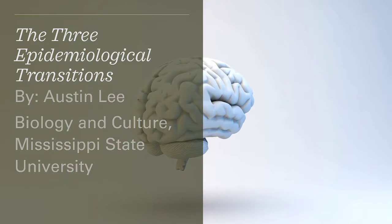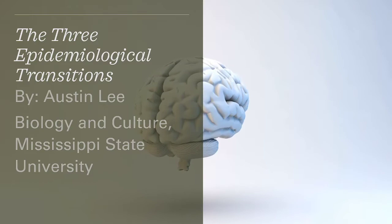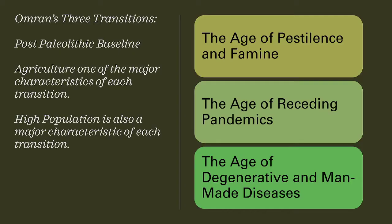Welcome to the continuation of our lesson on epidemiological transition theory. I'm Austin Lee from the biology and culture class of Mississippi State University, and today we're going to be talking about the three specific epidemiological transitions posited by Omran.